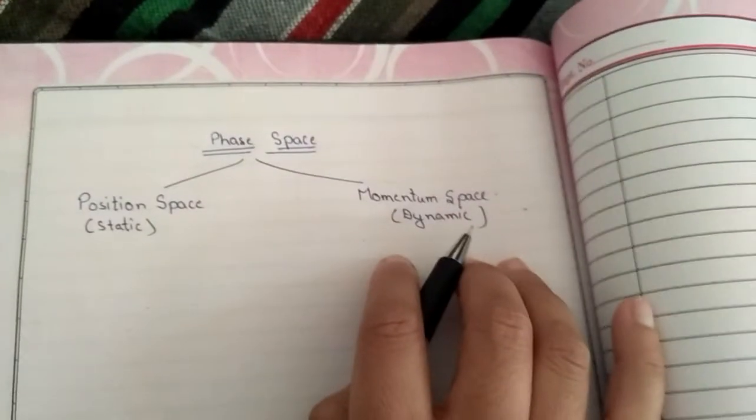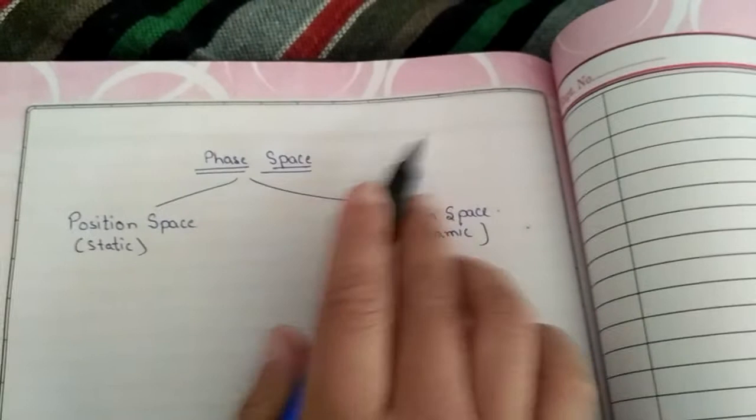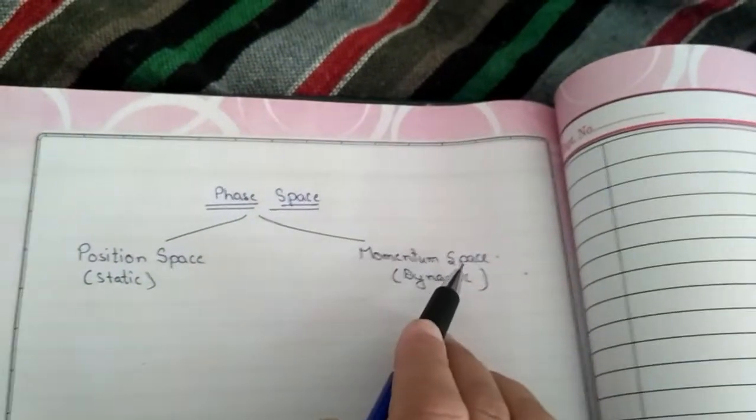Today we are discussing phase space. Phase space consists of two types of space: position space and momentum space.